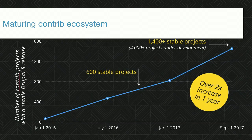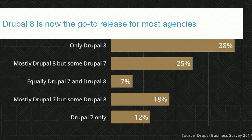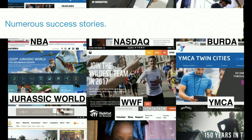Drupal 8 has really started maturing. In the last three months or so you can actually start building real sites. Many big contributed modules are now ported — Path Auto, Panels, Search API, Drupal Commerce just came out right before Vienna. The tidal wave is shifting where the important modules are either ported to Drupal 8 or very close. Agencies are starting to shift to using Drupal 8 either exclusively for new builds or as a mix of 7 and 8. So it's not just talk — real-world data shows people are actually using this to build things.